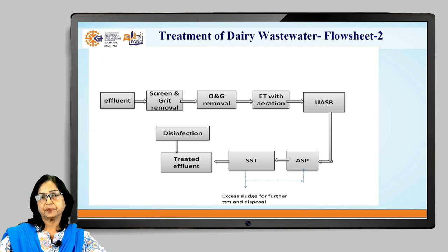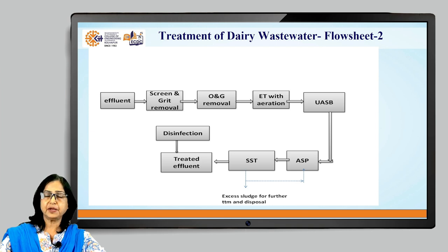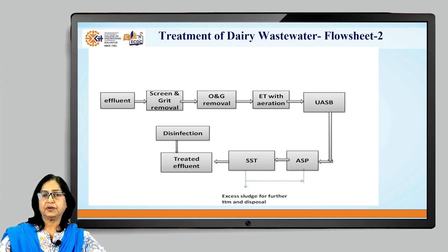In the second flow sheet, after screen, grit removal, and oil and grease removal, the wastewater is taken to an equalization tank with aeration, and from there fed to a secondary system consisting of UASB (upflow anaerobic sludge blanket) followed by an aerobic step. The settling step is skipped because UASB handles that, and it also offers the option of biogas recovery. The effluent is further treated aerobically — activated sludge process followed by a secondary settling tank — and the supernatant is disinfected and ready for disposal.